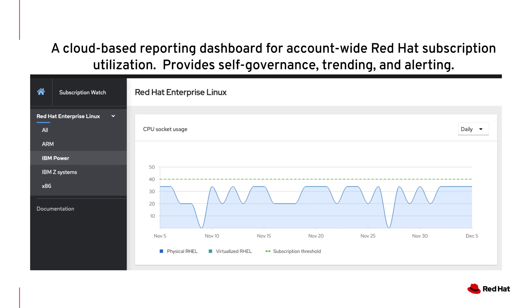In this example, we're showing Red Hat Enterprise Linux for IBM Power. We're showing a chart of this particular account's usage of that particular product line. We show roughly 40 sockets worth of IBM Power, calculated daily based upon the subscriptions in the account — regardless of the SKUs in play, there are roughly 40 sockets worth of IBM Power for RHEL provided by the subscriptions.